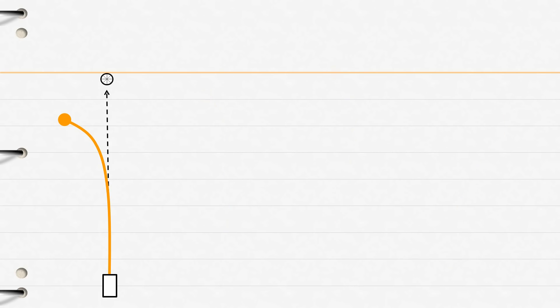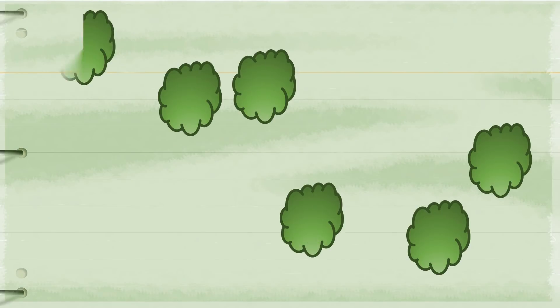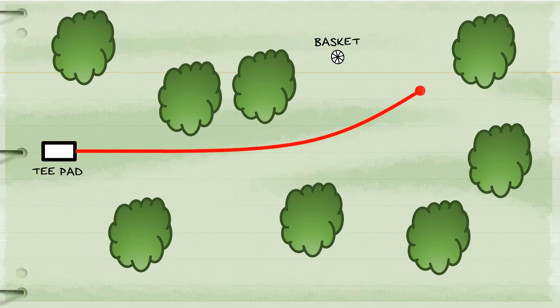To begin our discussion on individual uses for these patterns we'll start with our overstable flight. Because discs generating an overstable flight pattern have a strong tendency to pull to the left they make an excellent option for your hyzer shots further accentuating the discs natural tendency to the left.